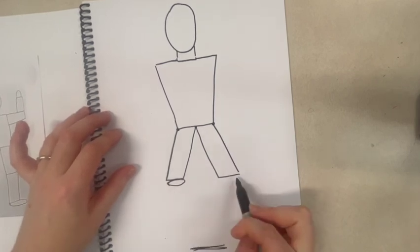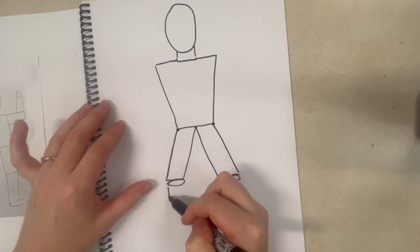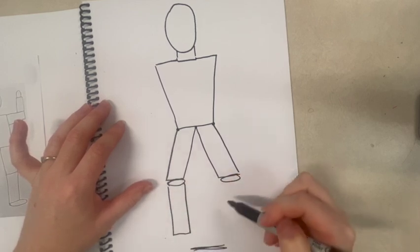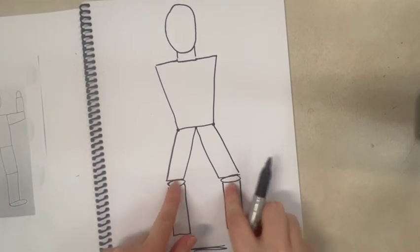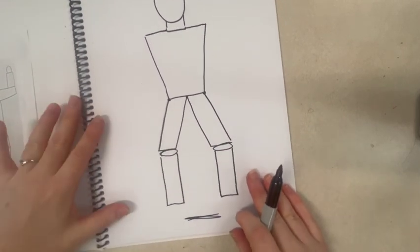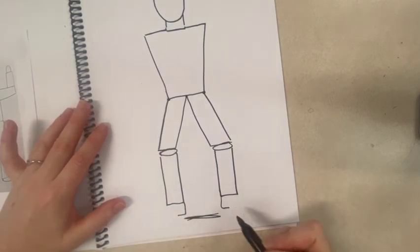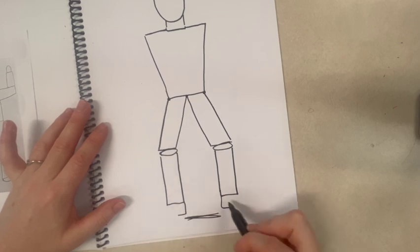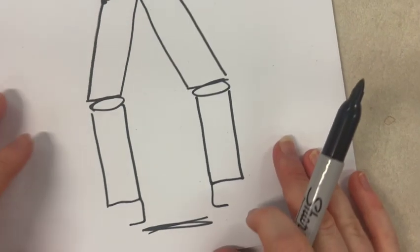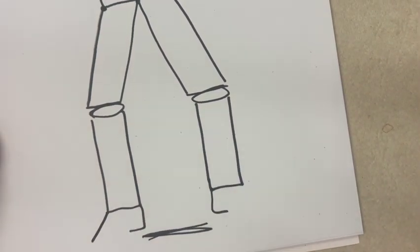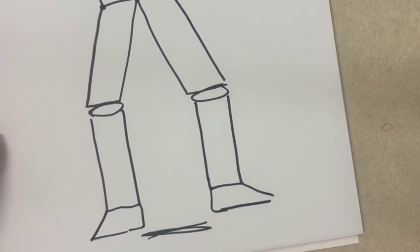Now I'm going to draw ovals for my knees, and then I'm going to make a straight rectangle. I'm showing that my knees are bending here. And now I can draw my shoes. So shoes, I literally just start off with like a little L. Then I make a diagonal line and then connect it. Diagonal line and then connect it.